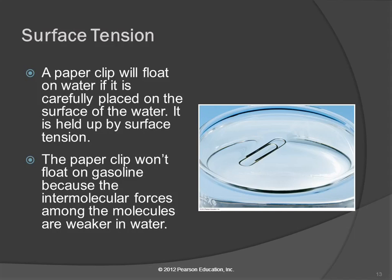Their feet aren't particularly paddle-like or anything; they look like they should just fall through the water. What's holding them up? It's surface tension. What you see is that the surface of the water appears to bend — almost like there was a skin on the water, or a thin film of saran wrap — and the paperclip is actually sitting on top of that. That's the surface tension of the water.